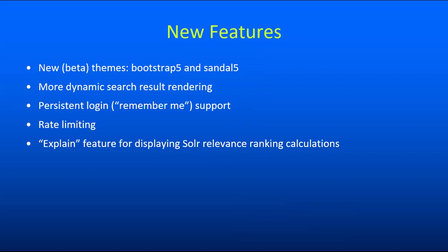We've added a feature called Explain, which can be turned on to enable pop-ups that explain Solr relevance ranking calculations within search results. This can be useful if you have power users like advanced librarians who want to fully understand why the search results are in the order they're in. It can be quite helpful for troubleshooting and it can make things a bit more readable than looking at Solr's debug output directly. We've also added support for on-screen virtual keyboards, which can be useful if you need users to search your collection using character sets that aren't easily available on their native keyboards.